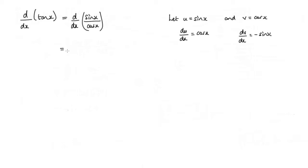Now the quotient rule is the following: we have v du dx minus u dv dx, and that's all over v squared.